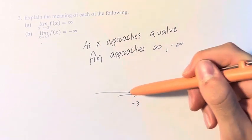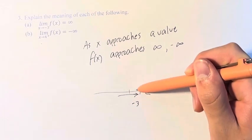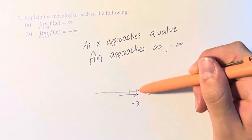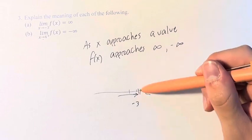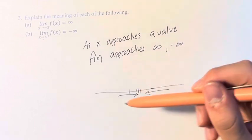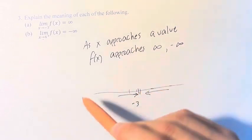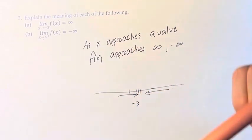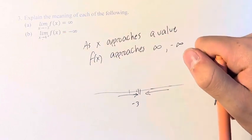if we have negative 3.1, negative 3.01, negative 3.001, negative 3.00001 — as we get closer and closer, the value of the function is going to go off to infinity.